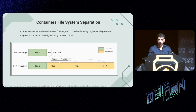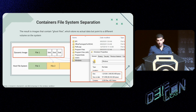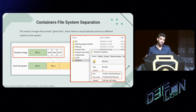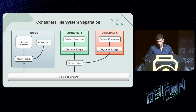Going back to containers: in order to avoid an additional copy of OS files, each container uses a dynamically generated image which points to the original using reparse points. The result is images that contain ghost files — files that store no actual data but point to a different volume on the system. When looking at a mounted container volume, the Windows folder appears to be 1.2 gigabytes in size but has an actual size on disk of only 57 megabytes. It was at this point that the idea struck me: what if I could use this redirection mechanism to obfuscate file system operations and confuse security products?